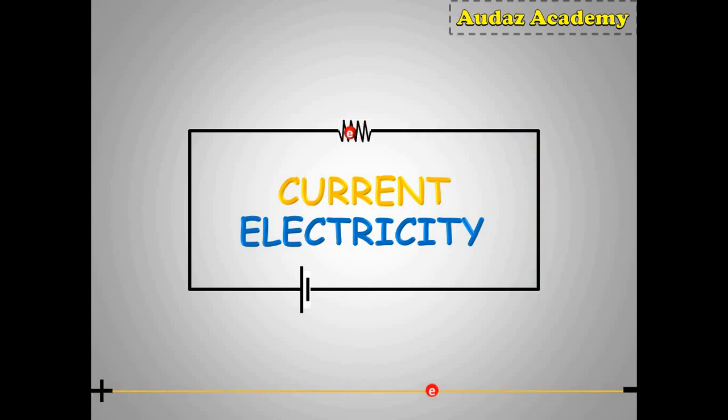It simply means flow from one point to another. We all know the water current, which is flow of water. Similarly, flow of electrons is called as electric current.